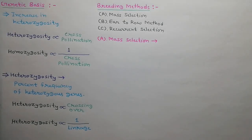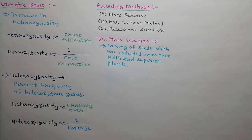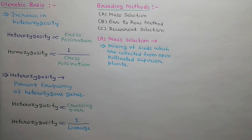First of all, we will discuss about the mass selection method. In this method, seeds are collected from superior plants which are produced by open pollination. These seeds are then mixed up as a mass to grow the next generation.